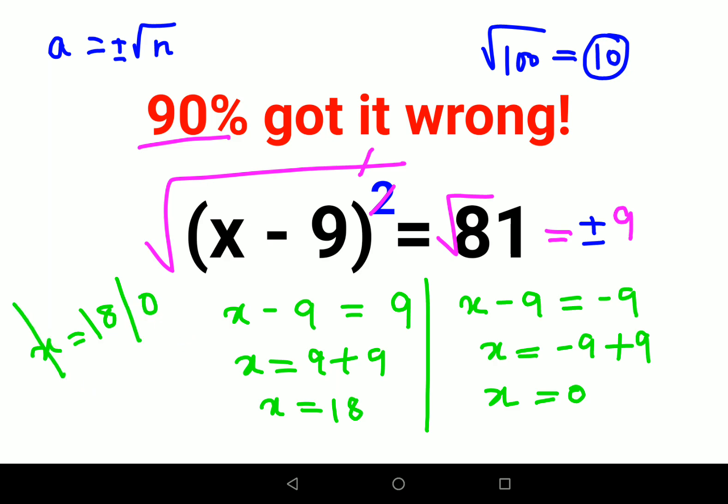Now if you put the value of x as 18 - if I put the value of x as 18, this becomes 18 minus 9 which is 9, right? The square gets you 81, so this is correct.